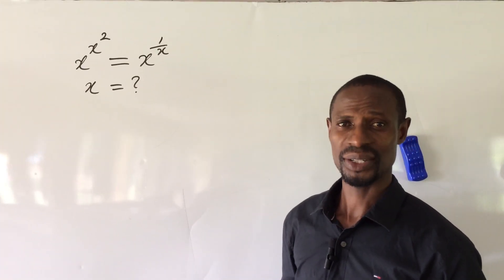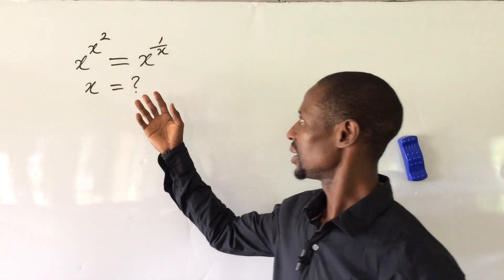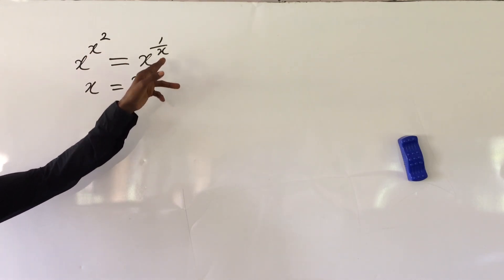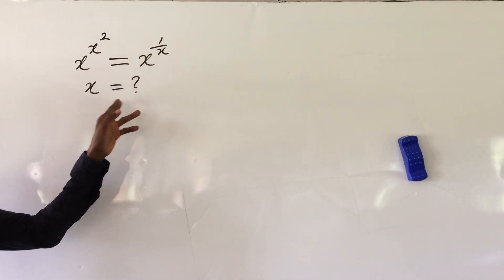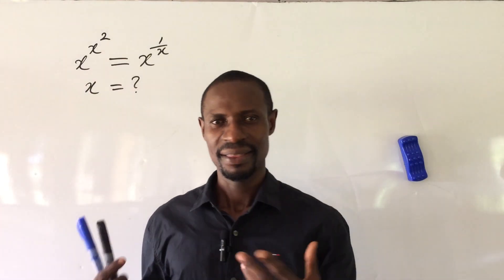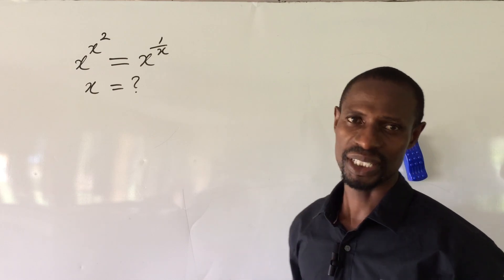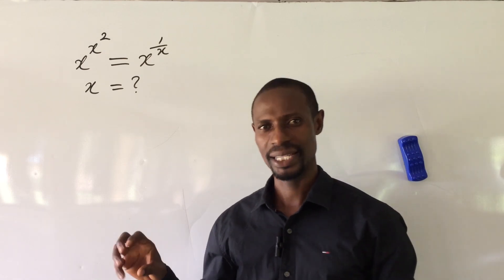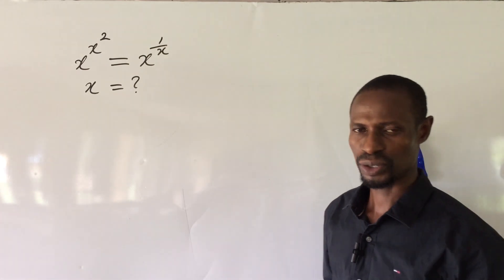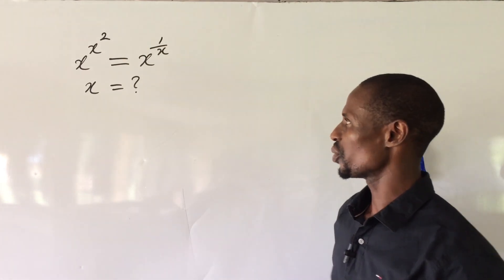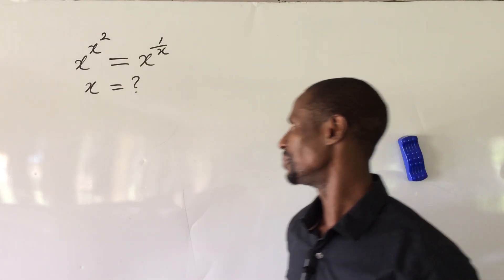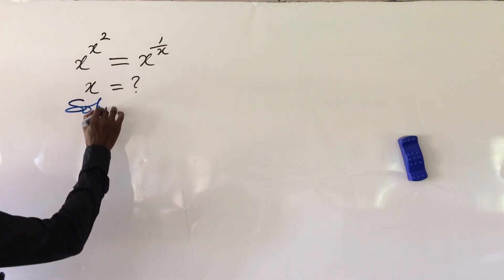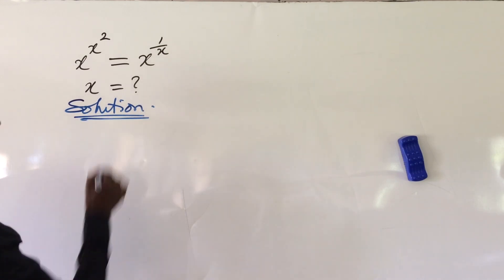Welcome everyone to this class. We have another nice exponential challenge. The question is: x to the power of x raised to the power of 2, equal to x to the power of 1 over x. What would be the possible values of x? I decided to bring this question because of an exponential equation I solved where I failed to identify that one of the solutions was extraneous. Let's look at this together.